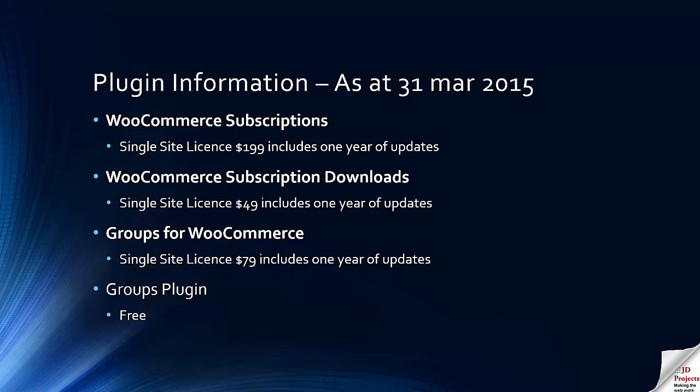Let's have a look at the prices for these various plugins. The WooCommerce Subscriptions plugin single site license starts at $199 and includes one year of updates. If you wish to use subscription downloads, you will need the subscription download plugin, which has a single site license of $49 including one year of updates. If you are going to integrate Groups with WooCommerce, the Groups plugin is free but the Groups for WooCommerce integration plugin has a single site license starting at $79, including one year of updates. If you buy multiple licenses, the costs are quite considerably reduced.